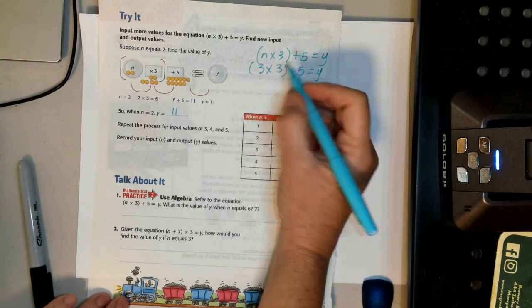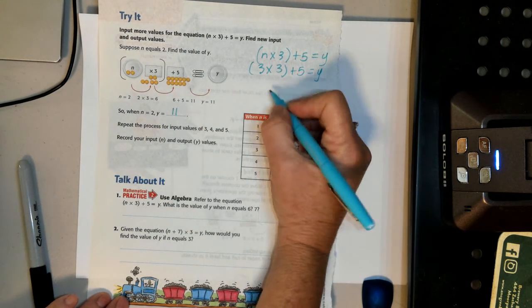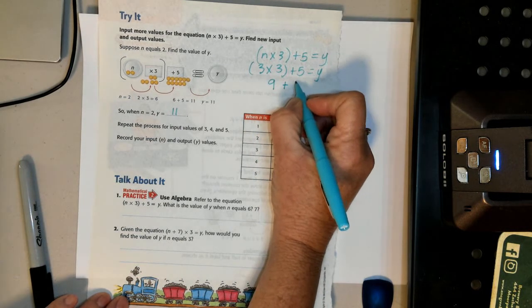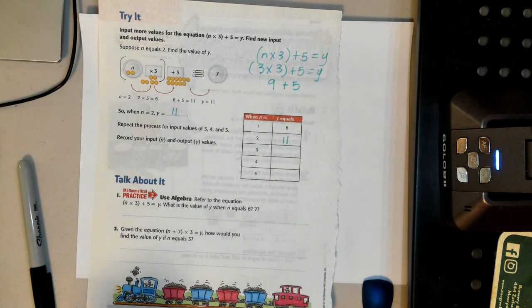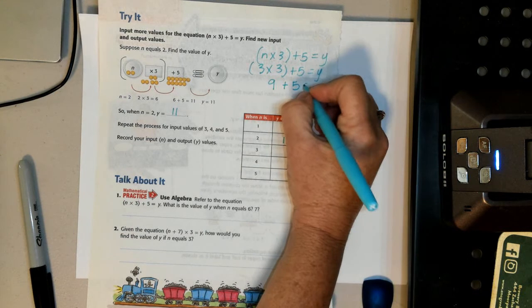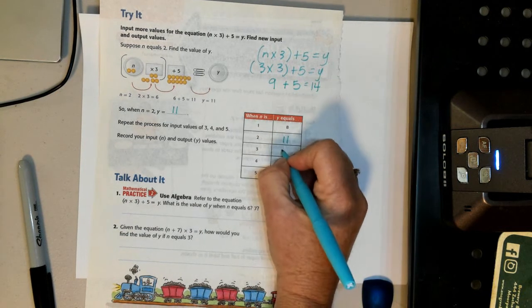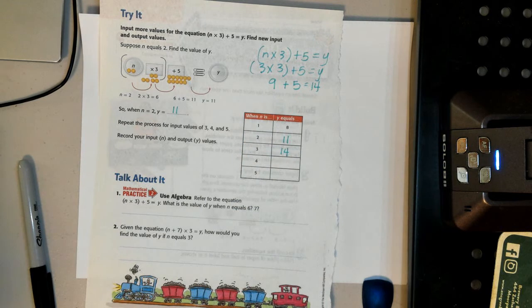Well, 3 times 3 is, because we always do that first, 9. And we have 9 plus 5. 9 plus 5 is 14. So y is 14. And you just keep doing it.